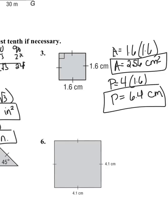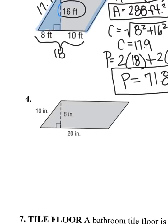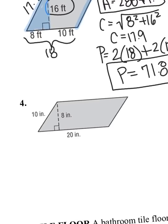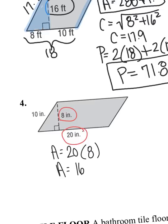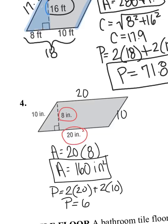Question number 4 — another parallelogram where they've already given us a lot of information, including the base and the height. Circling the base and height: area equals 20 times 8, so area equals 160 inches squared. For perimeter, opposite sides are equal, so it's 2 times 20 plus 2 times 10, giving perimeter equals 60 inches.